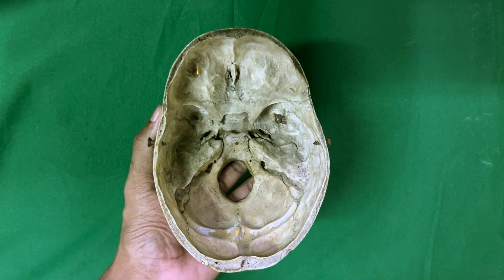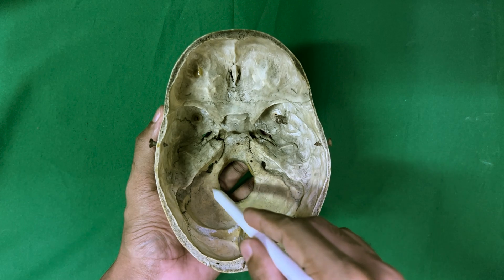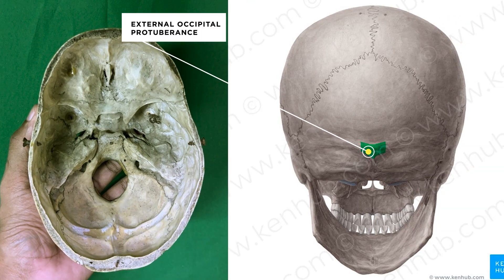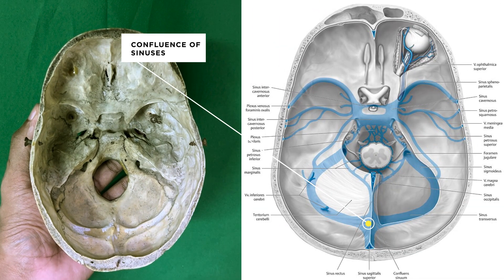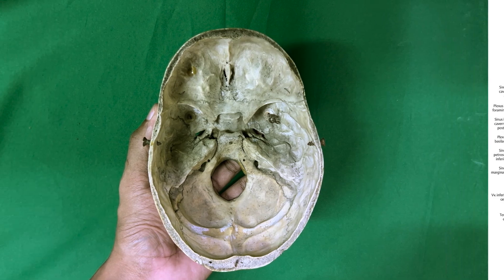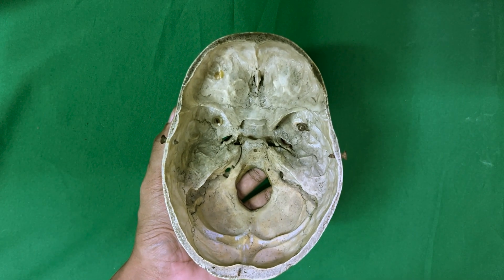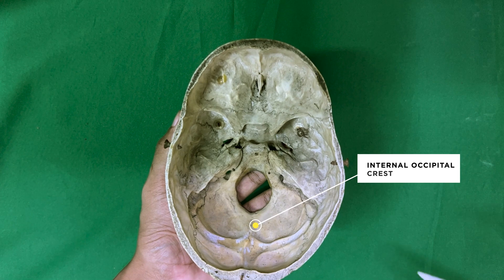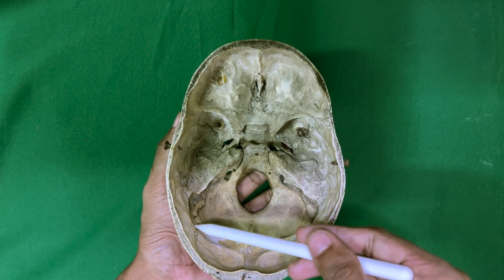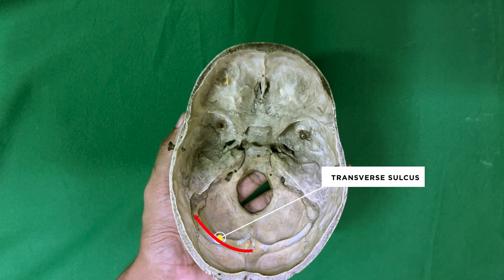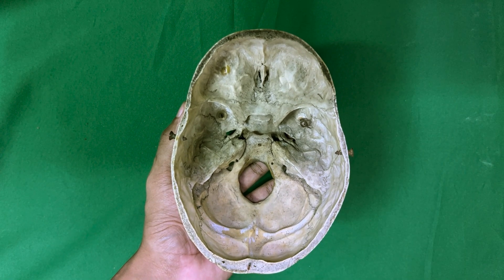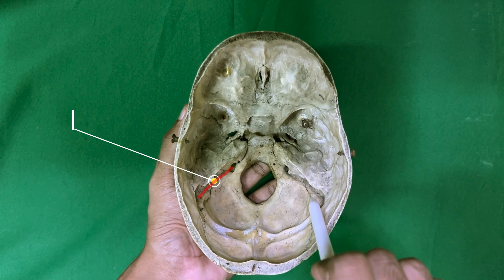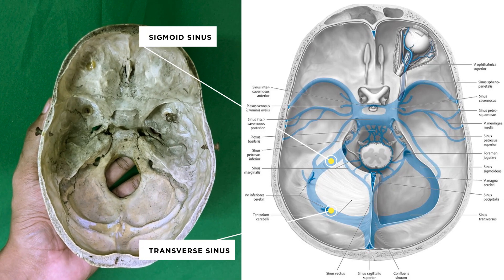The squamous part of the occipital bone shows the internal occipital protuberance, which lies opposite the external occipital protuberance. It is also related to the confluence of the sinuses. The internal occipital crest runs in the median plane from the internal occipital protuberance to the foramen magnum. The transverse sulcus is quite wide and runs laterally from the internal occipital protuberance to the mastoid angle of the parietal bone, where it becomes continuous with the sigmoid sulcus. The transverse sulcus lodges the transverse sinus.